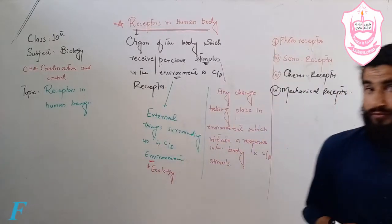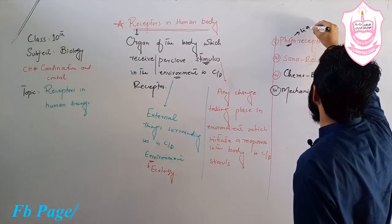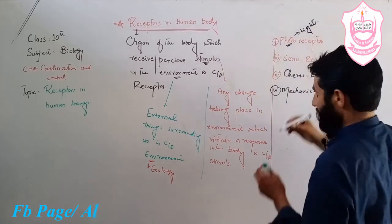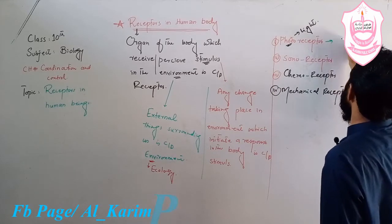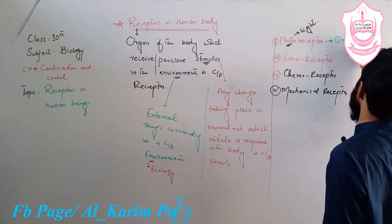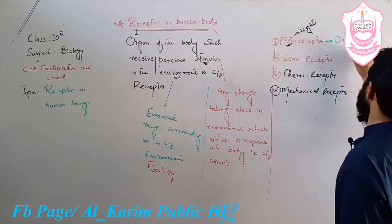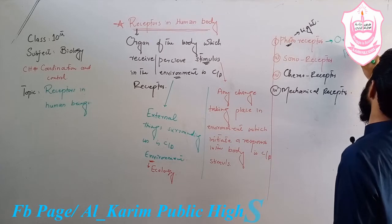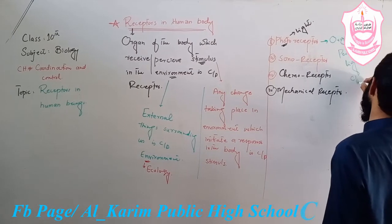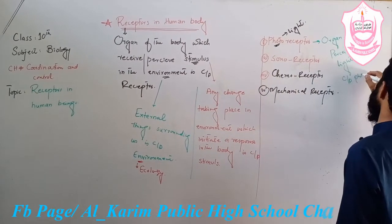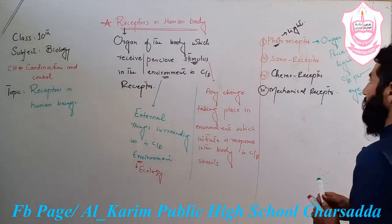Photo means light, so the organ of the body which perceives light is called a photoreceptor. The organ which perceives light is called a photoreceptor. For example, the eye is a photoreceptor.